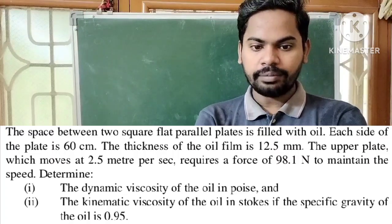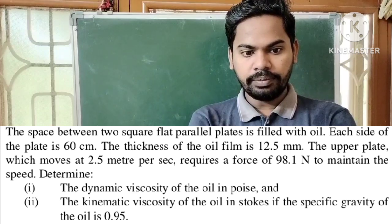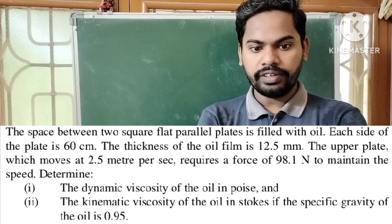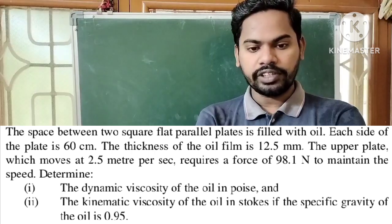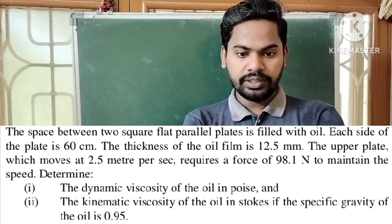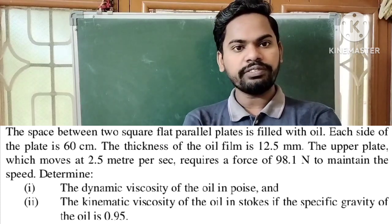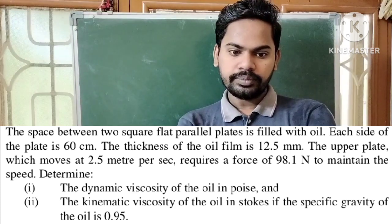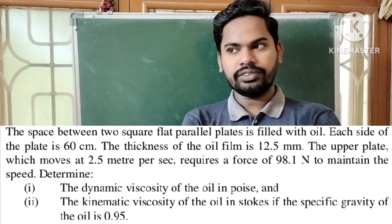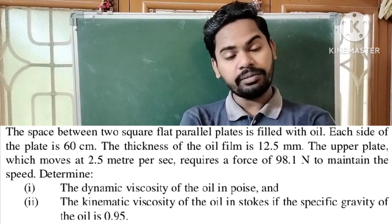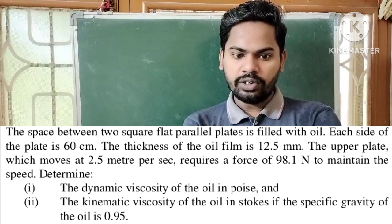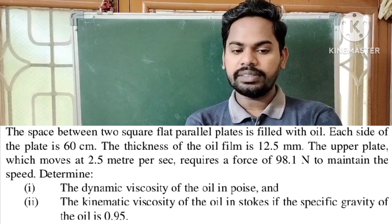The space between two square flat parallel plates is filled with oil. Each side of the plate is 60 centimeters. The thickness of the oil film is 12.5 mm. The upper plate moves at 2.5 meters per second and requires a force of 98.1 Newtons to maintain the speed. Determine the dynamic viscosity of the oil in poise, which is a CGS unit of dynamic viscosity, and the kinematic viscosity of the oil in Stokes, which is a CGS unit of kinematic viscosity.